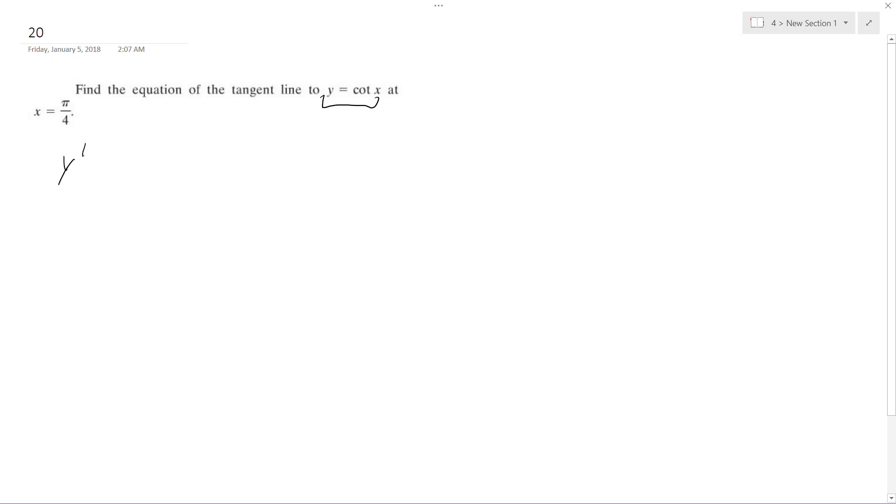So y prime is going to be equal to d/dx of cotangent x, and the derivative of the cotangent is equal to negative cosecant squared x.